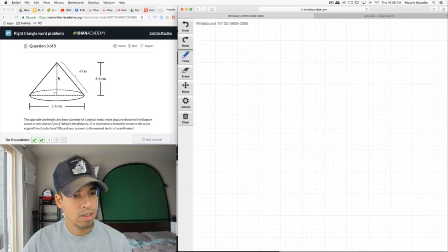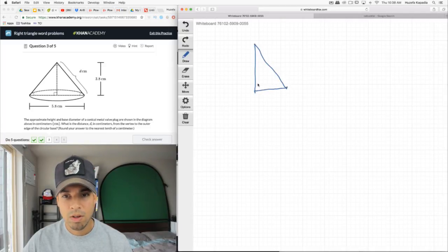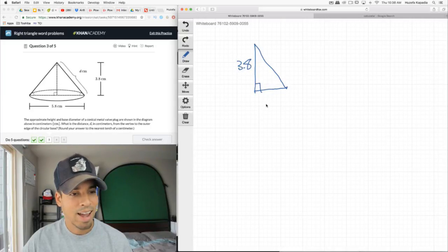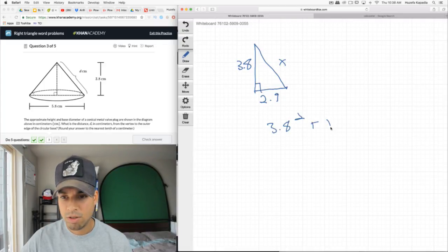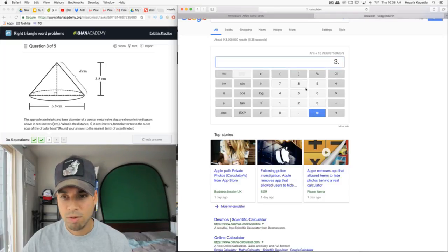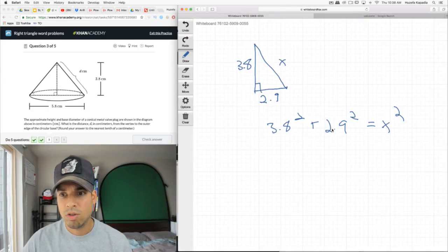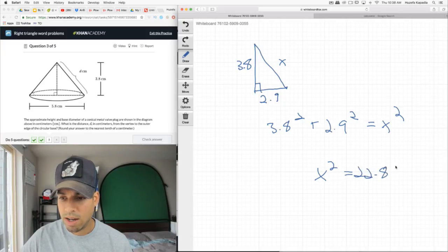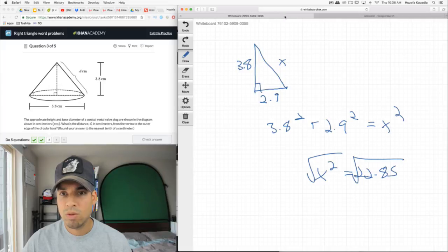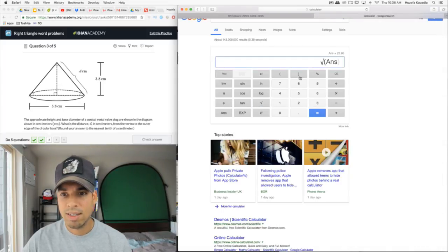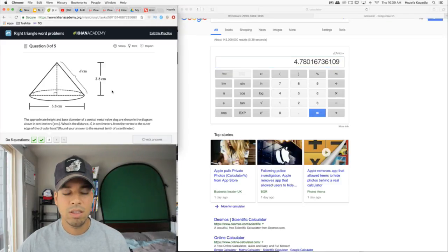What I'm going to do is use Pythagorean's theorem. We know that this side is 3.8. We know that this side is half of 5.8, which is 2.9. Pythagorean's theorem says 3.8 squared plus 2.9 squared equals x squared. This is a calculator problem. So x squared equals 22.85. To find our answer, we take the square root. The square root of 22.5 equals 4.78. So the nearest tenth is 4.8. Let's see if that's correct.